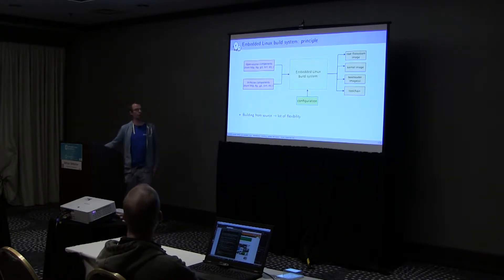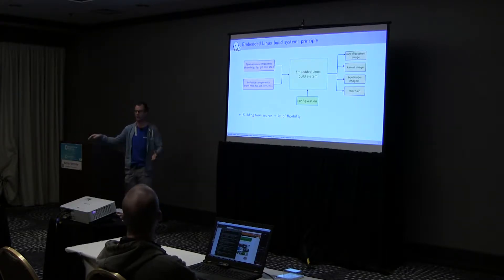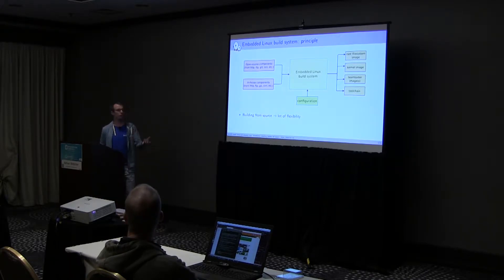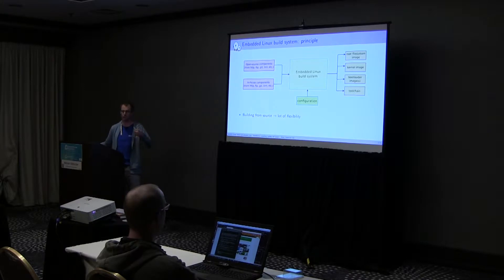BuildRoot processes all those things, making sure it downloads, extracts, configures, builds, and installs all components in the right order to finally produce what you're interested in: a root filesystem image, a kernel image, a cross-compilation toolchain, and potentially bootloader images. Everything you need to get your embedded Linux system up and running. Because you're building from source, you can adjust the version of BusyBox, the version of Qt, adjust config options, and really customize your system in a very fine-grained way.